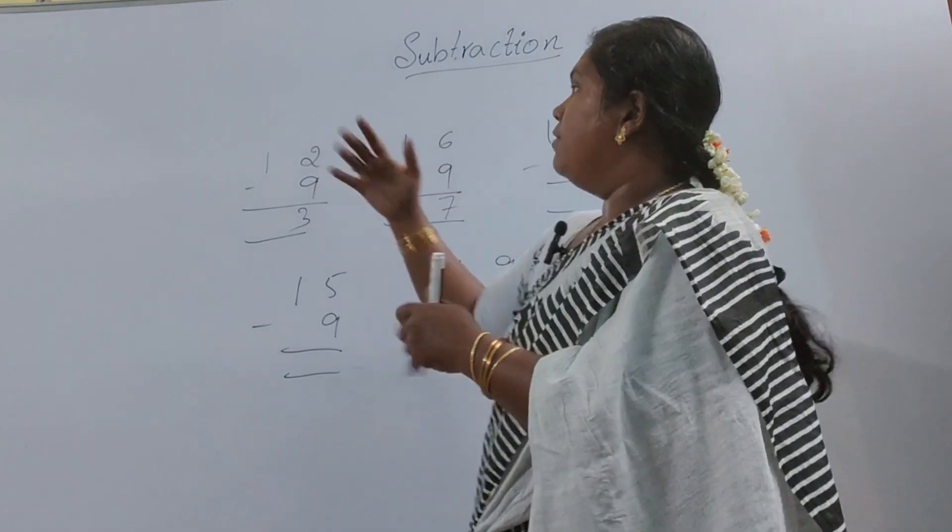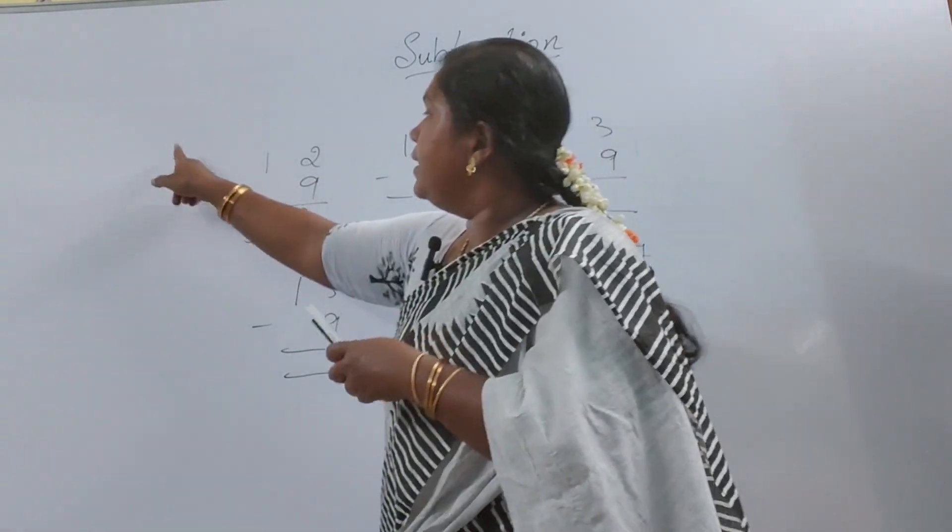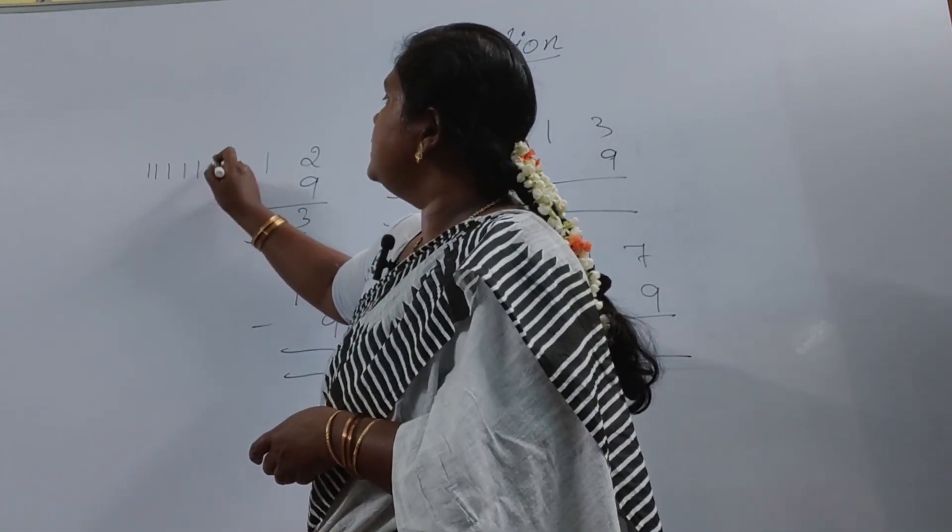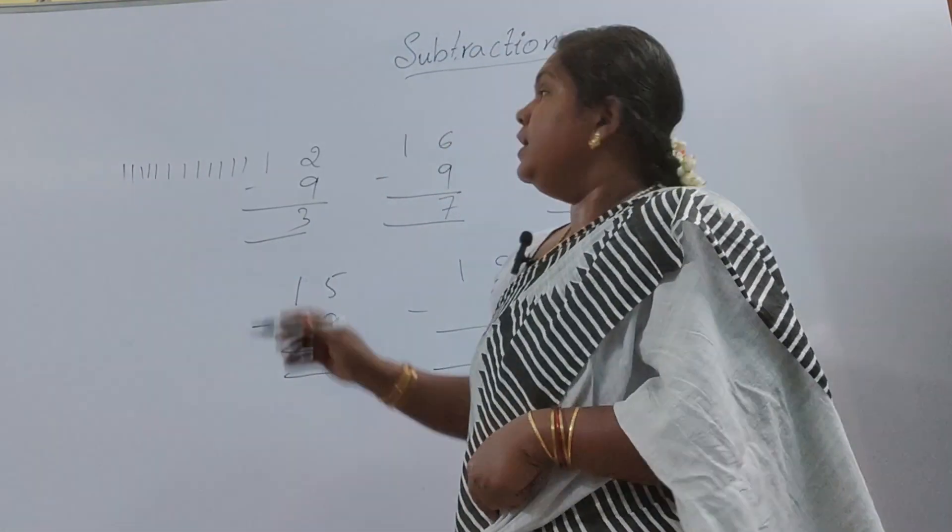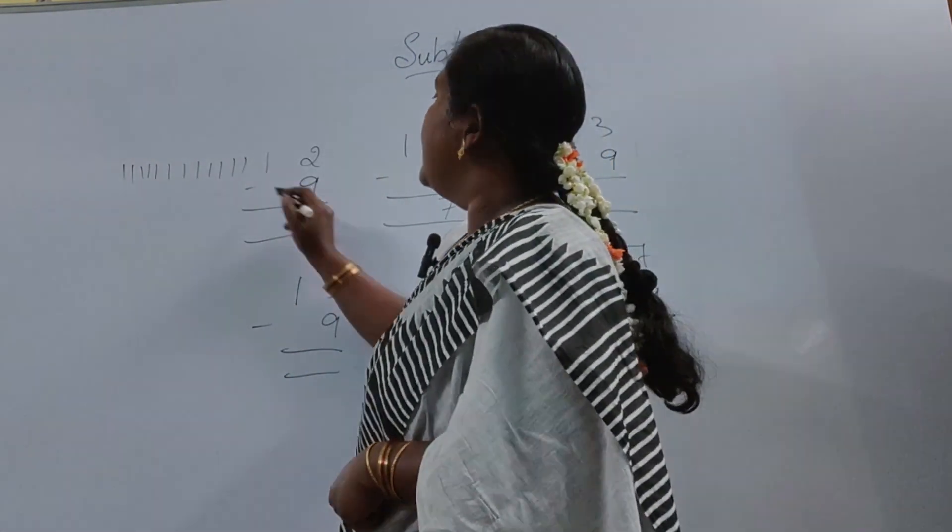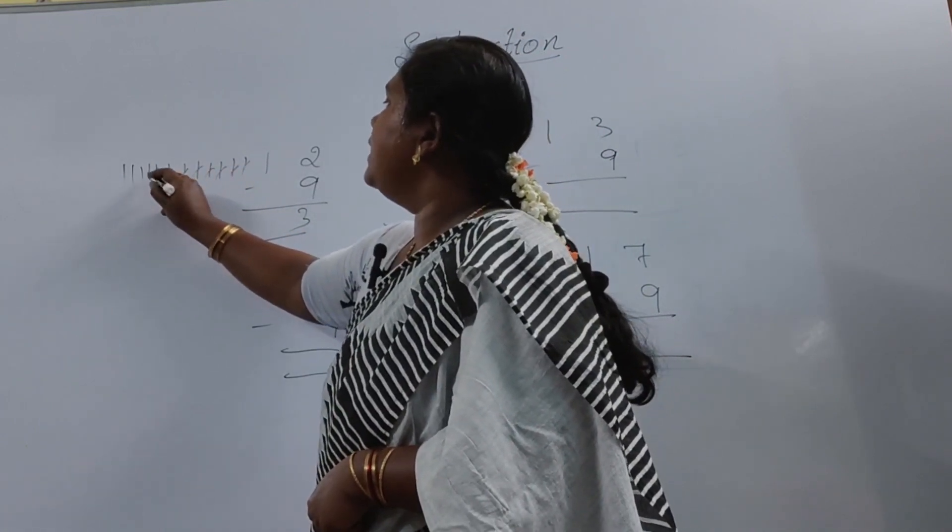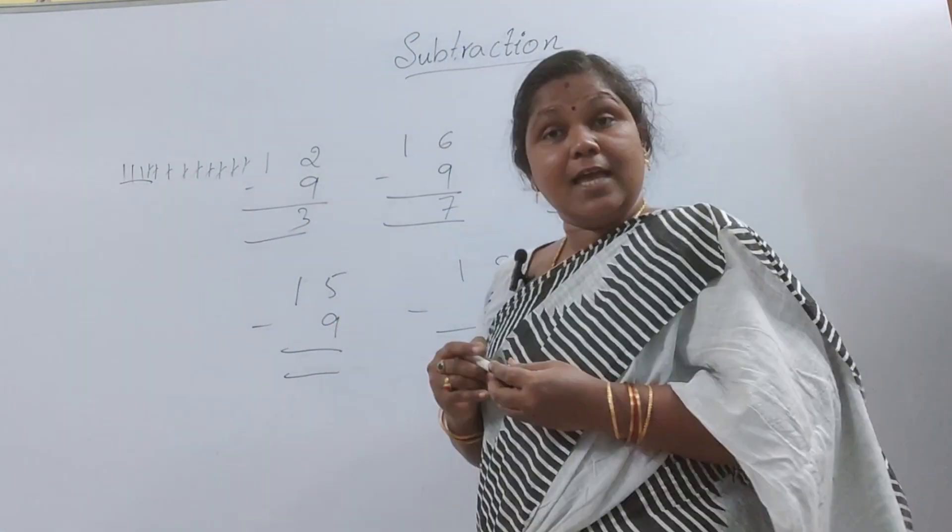See how you used to count is we will take 12 after we are going to deduct. We will be writing 12 lines: 1, 2, 3, 4, 5, 6, 7, 8, 9, 10, 11, 12. Right? In that we are going to deduct 9: 1, 2, 3, 4, 5, 6, 7, 8, 9. How much we left? 3 left. That's the 3 answer we got.